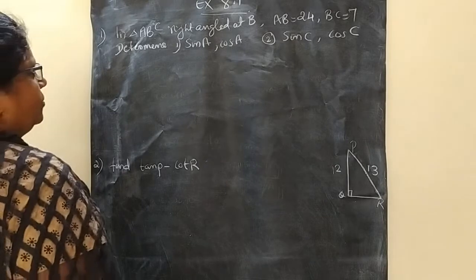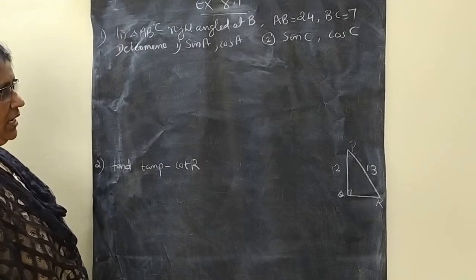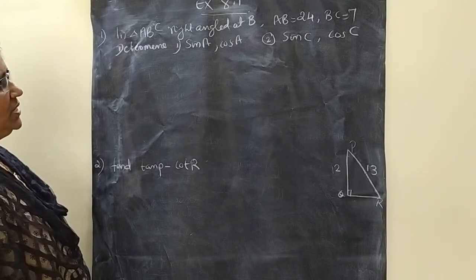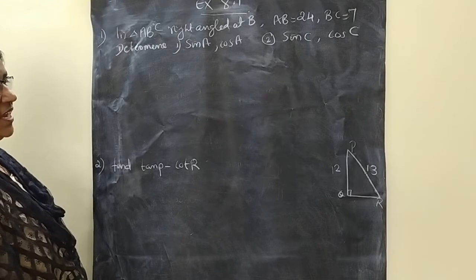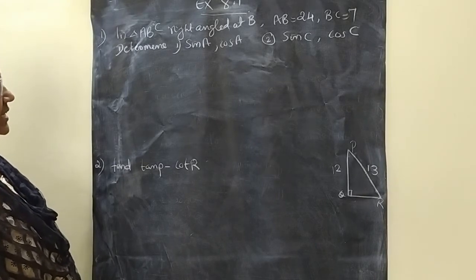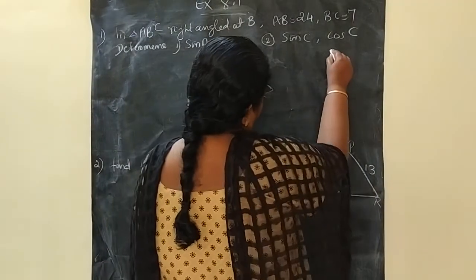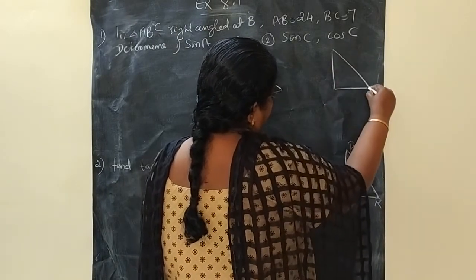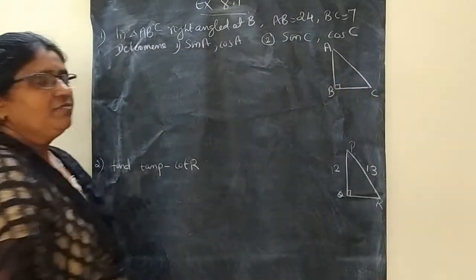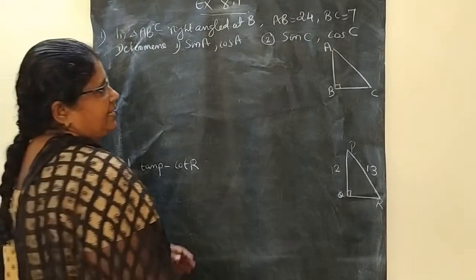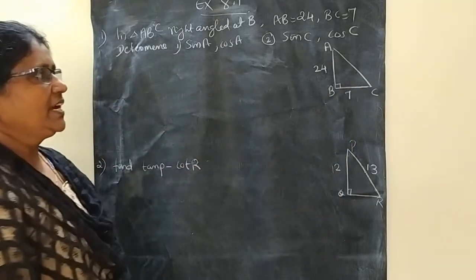First exercise: in triangle ABC, right angle at B, AB equal to 24, BC equal to 7 cm. Determine sine A and cos A, and sine C and cos C. It is better to draw a figure. Draw a right triangle ABC with right angle at B, and write the details: AB equal to 24, BC equal to 7. Two sides are given.